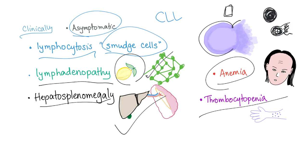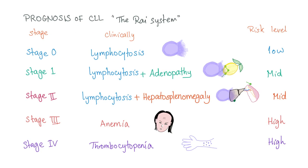Lymphadenopathy can occur, as well as hepatosplenomegaly. Of course, anemia and thrombocytopenia can occur too. If you get anemia and thrombocytopenia, this is severe CLL with bad prognosis. In CLL, classifications and prognosis are crucial. We have the RAI staging system — it's a bit confusing because it starts with zero.